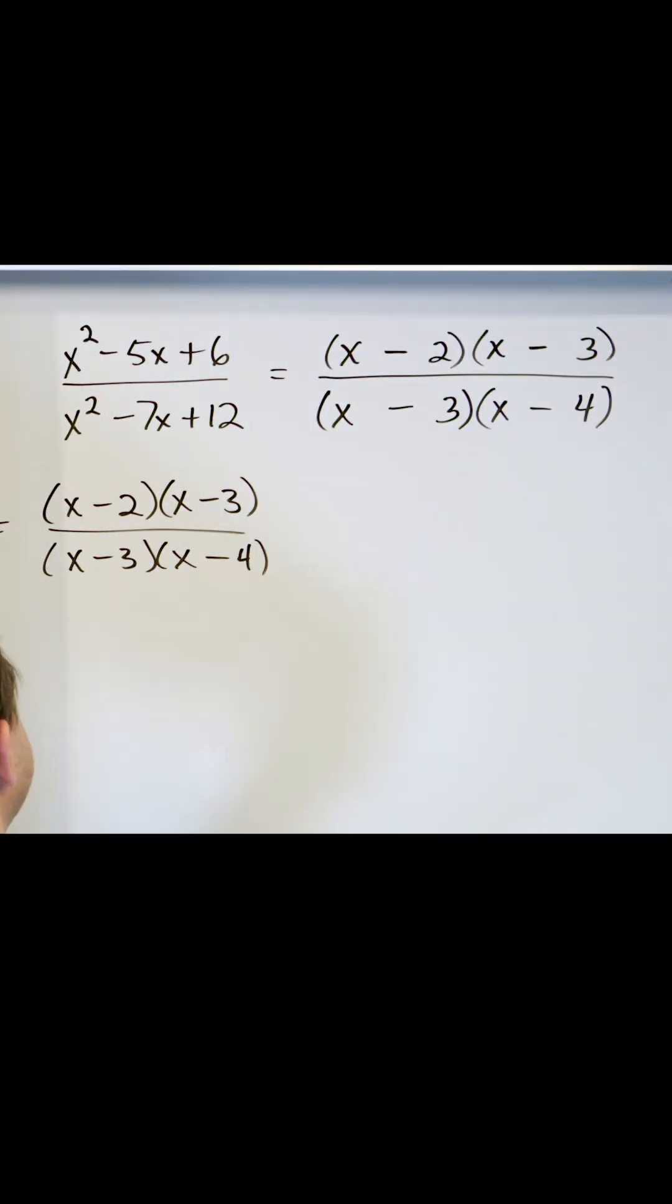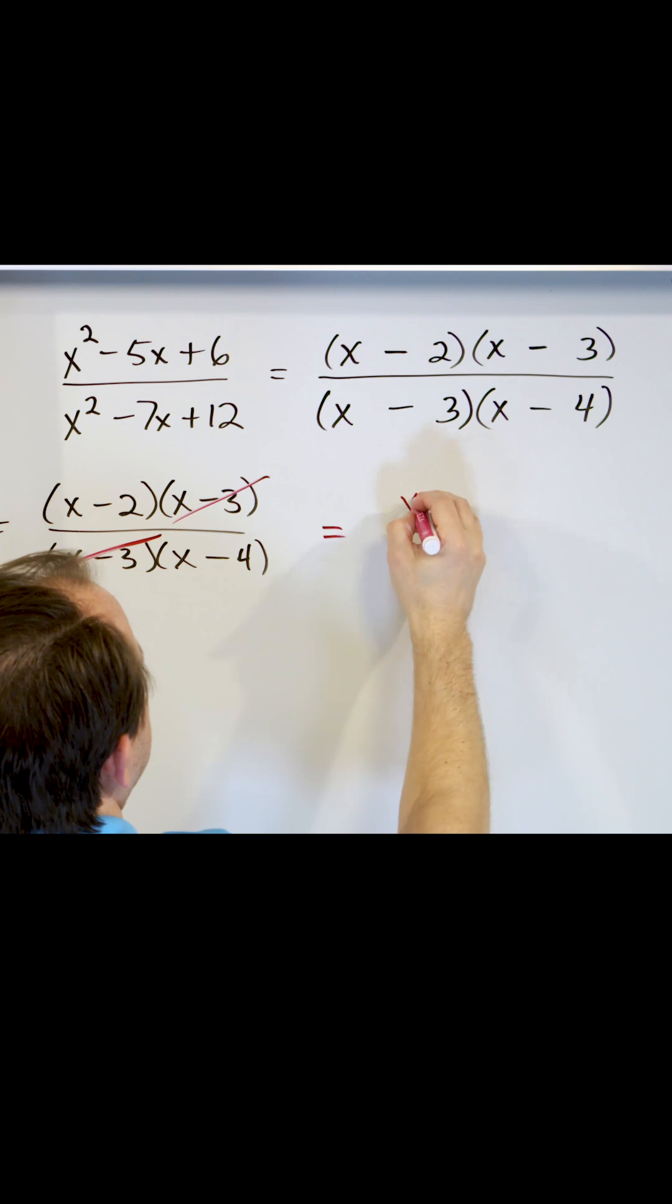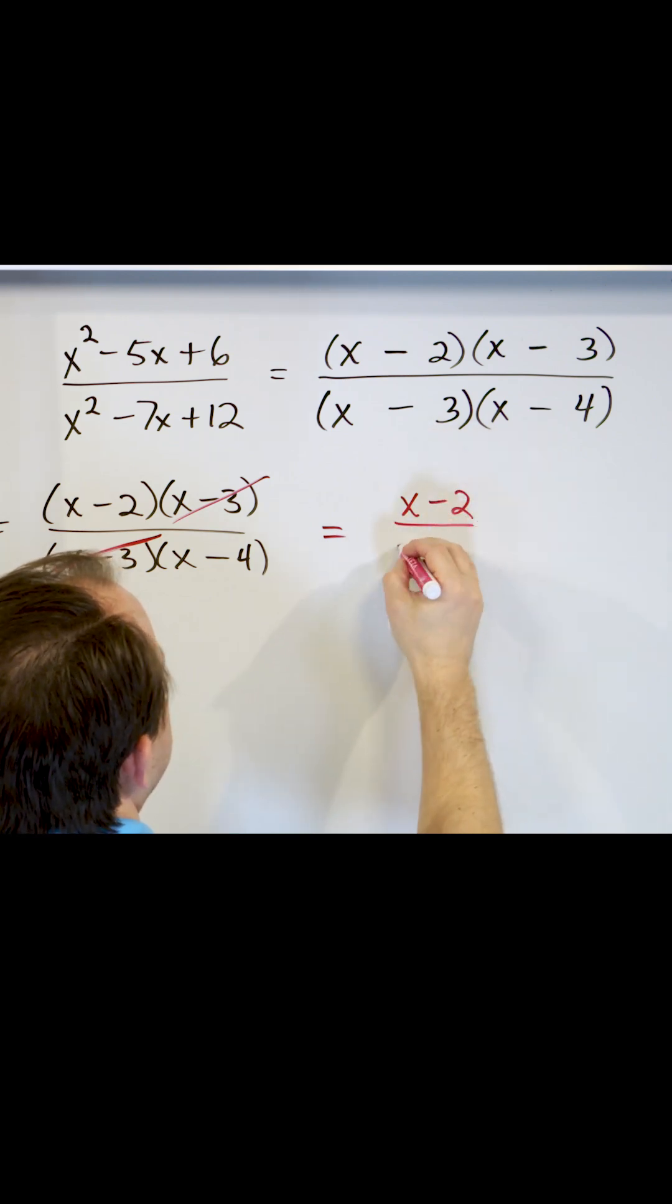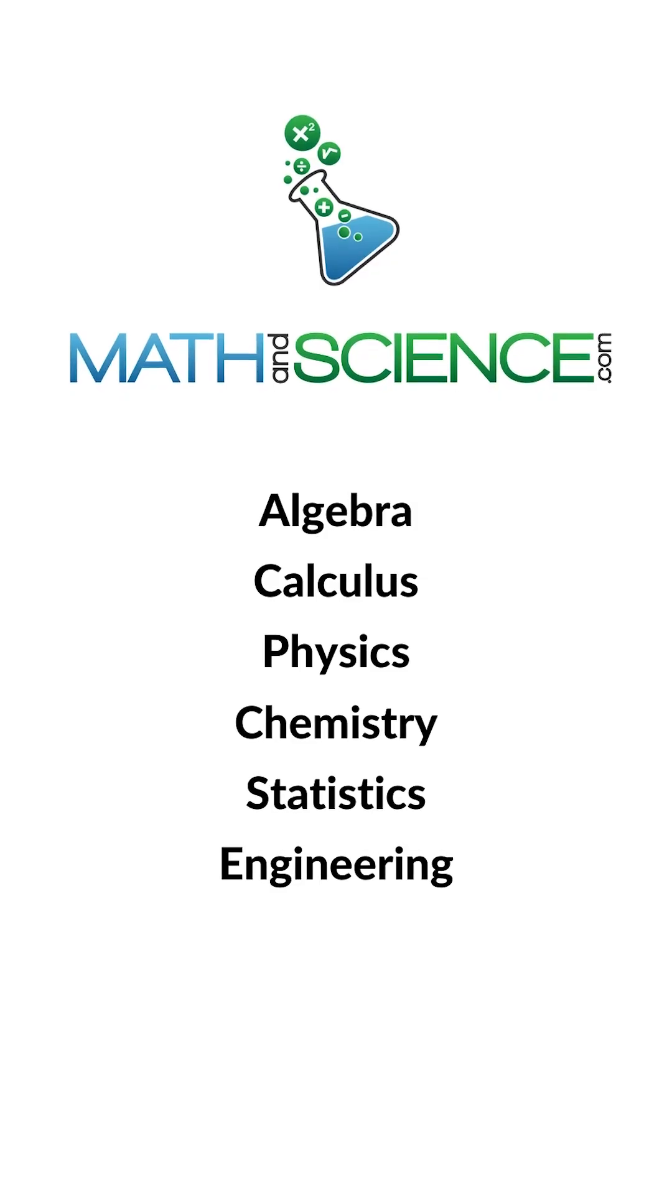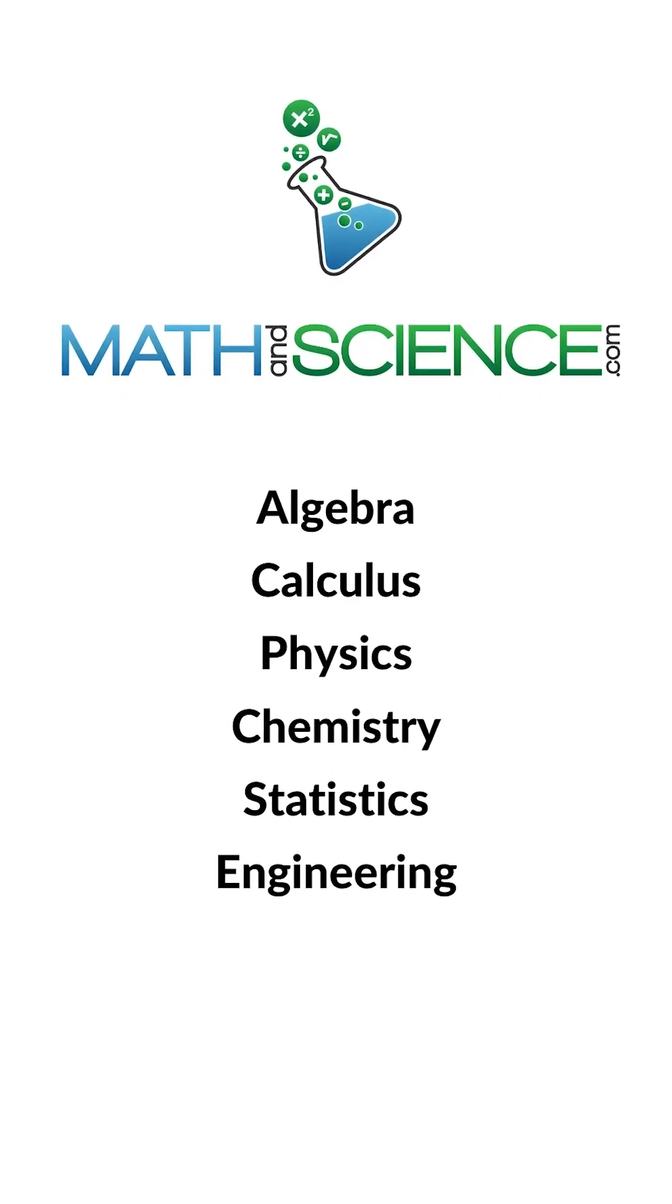And so then you can see immediately that you can divide top and bottom by x minus three. And so then the final answer will be on the top, x minus two, on the bottom, x minus four. Learn anything at mathandscience.com.